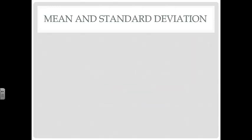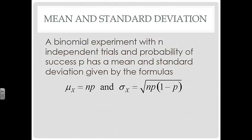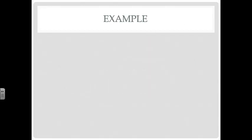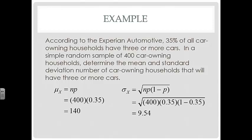Let's look at the mean and standard deviation for binomial probability distributions. Where N is the number of independent trials and P is the probability of success, the mean formula is simply N times P. The standard deviation is the square root of N times P times one minus P. For a sample of 400 car-owning households with P = 0.35, the mean is 140 households and the standard deviation is 9.54 households.